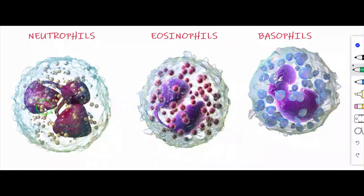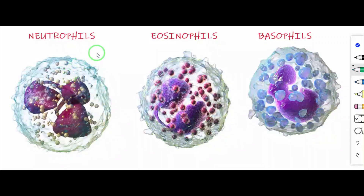Neutrophils are large in size and have two to seven lobed nucleus. These neutrophils form 60% to 65% of the total leukocytes. Their numbers are increased during infection and inflammation. Eosinophils have a bi-lobed nucleus and form 2% to 3% of the total leukocytes. Their number increases during conditions of allergy and parasitic infections.